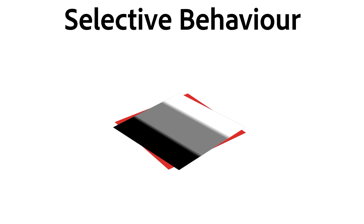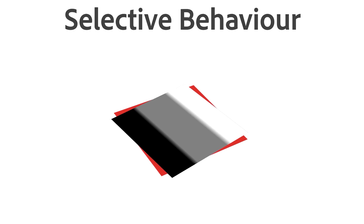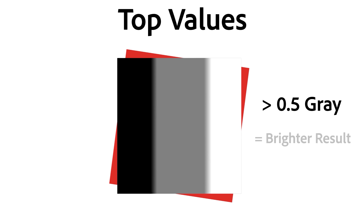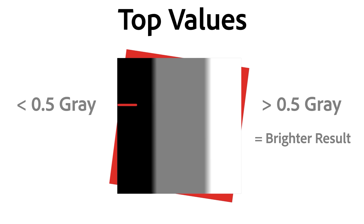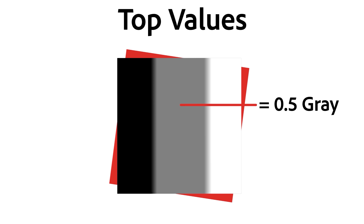Both Add Sub and Overlay have a special behavior that depends on the values of the top component. If the top component is brighter than 0.5 middle gray, they will brighten the bottom component in your result. If the top is darker than 0.5, it will darken your result. And if the top is at exactly 0.5 middle gray, the bottom is left unchanged.